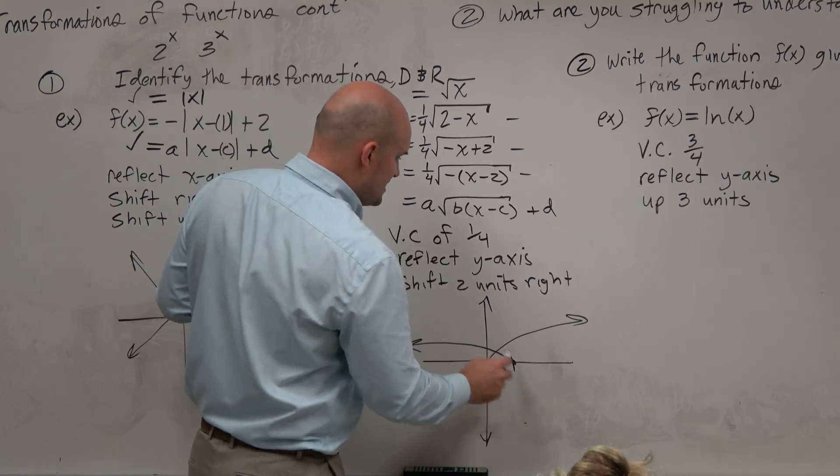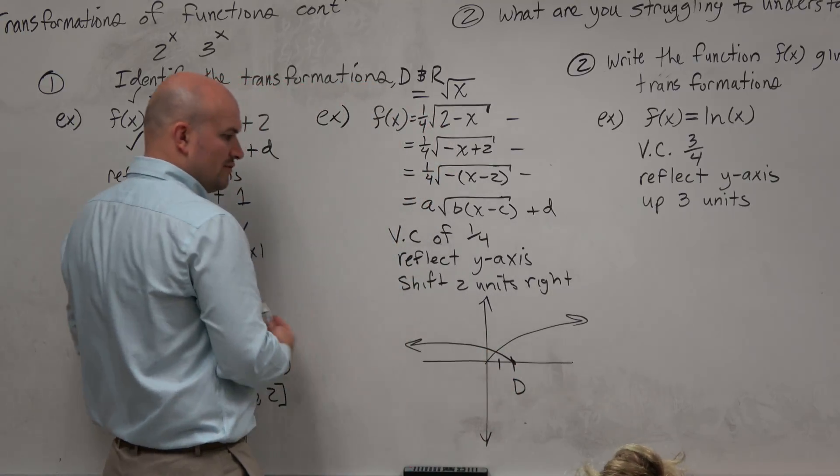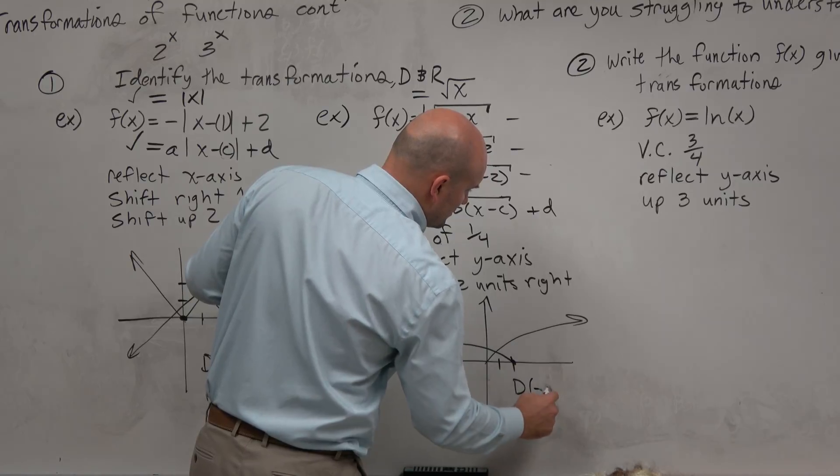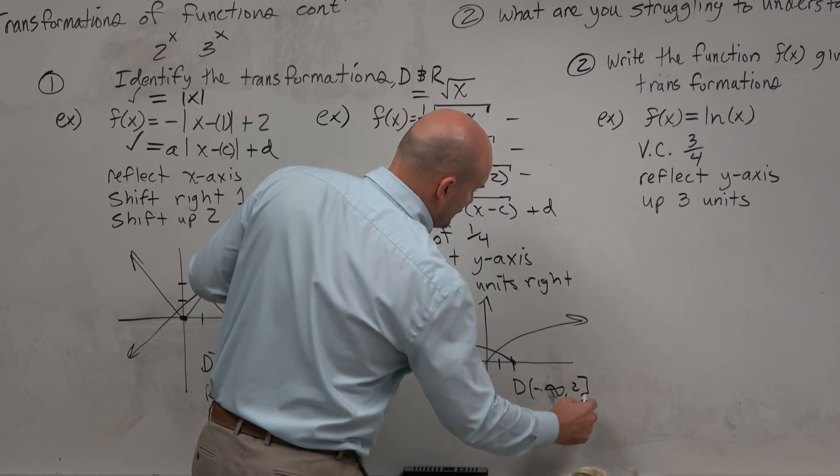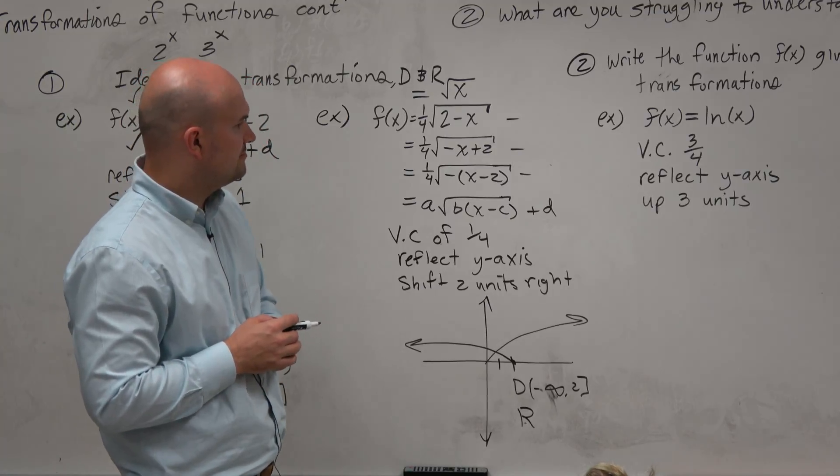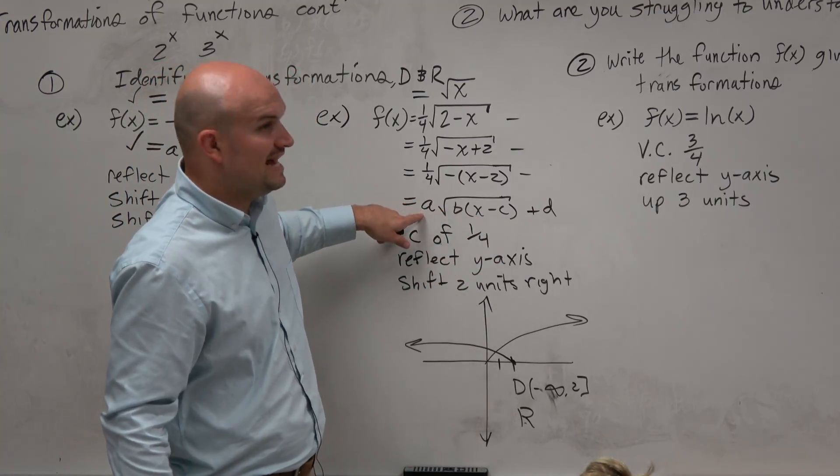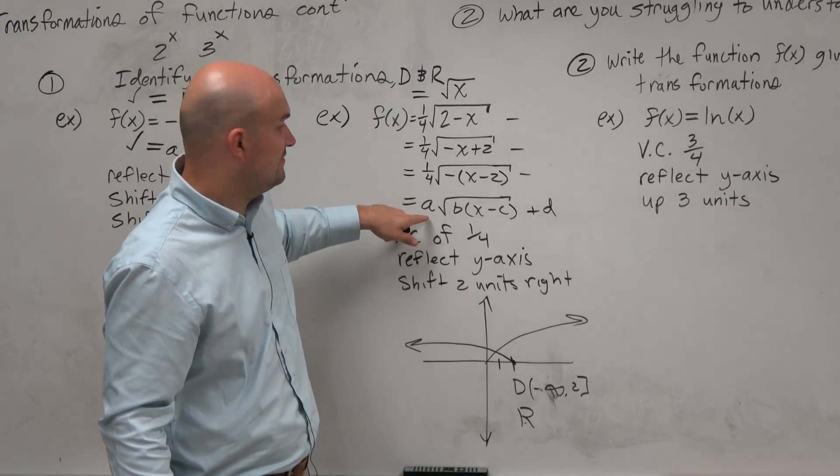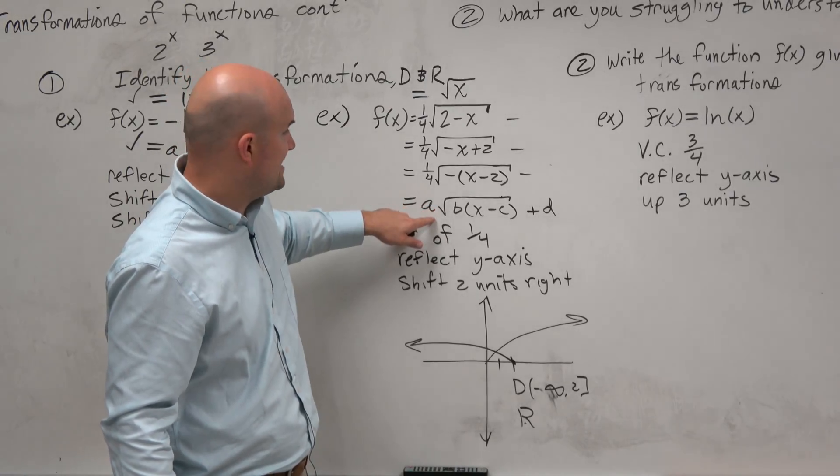So now I can see that my domain is going to be going from negative infinity to 2. And my range, you guys can see there's a. The only thing that affects the range is if a is going to be negative or if you have a d.